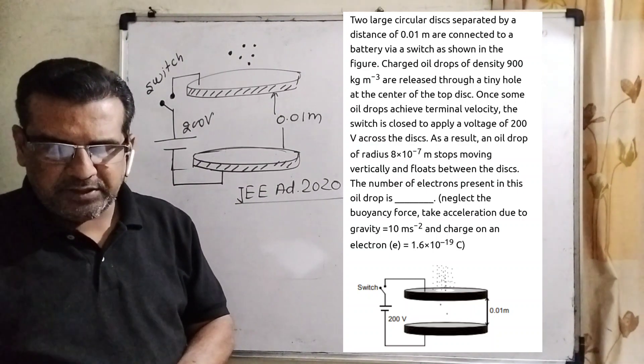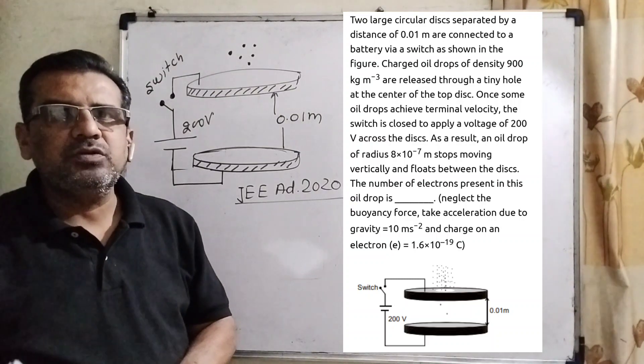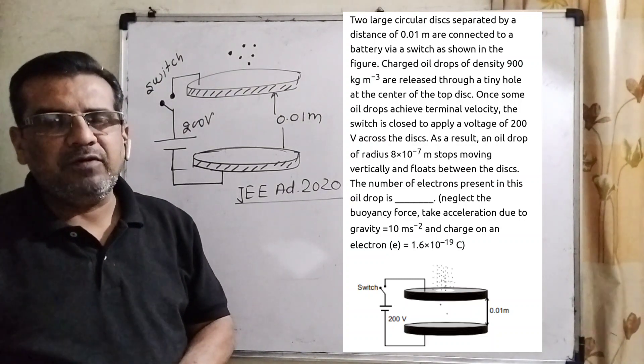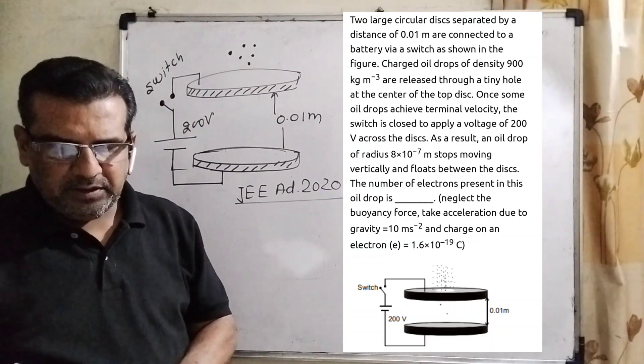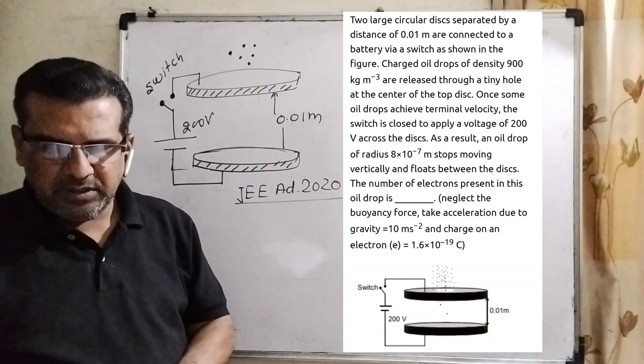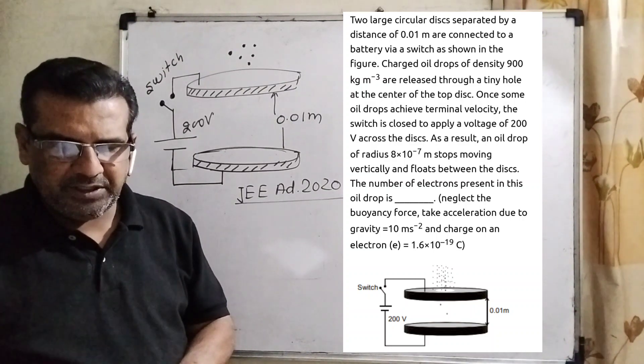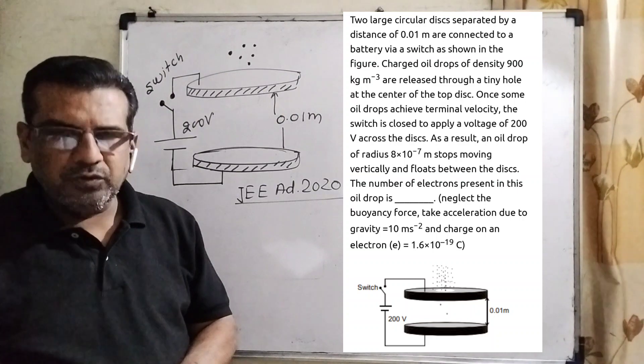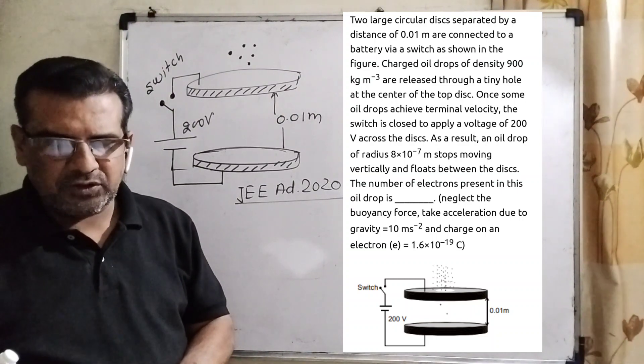The number of electrons present in this oil drop is - that's what we need to find. The number of electrons present in this oil drop.